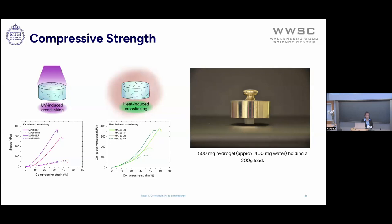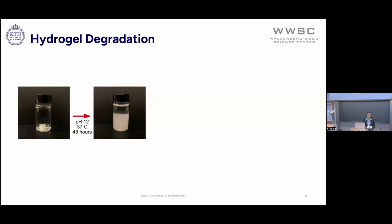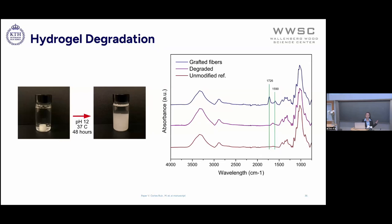To finalize this project, we made fiber-reinforced hydrogels that were bio-based using a fully green method. It would be great if we can degrade them back and recover the fibers. I used the hydrogel, put it in a solution of pH 12 at 37 degrees, and left it for 48 hours. The hydrogel completely lost its shape, but I was able to collect the fibers and confirm by FTIR that all the polymers were cleaved off. We still require more investigations to know whether the fibers are suitable to be reused in other applications or if they can still degrade in nature.